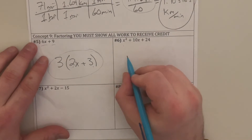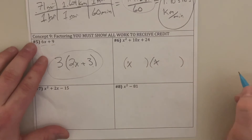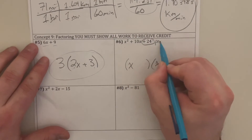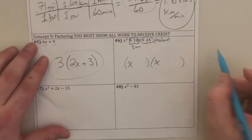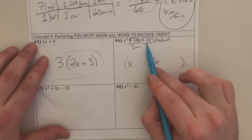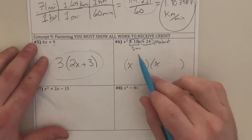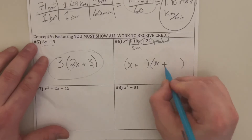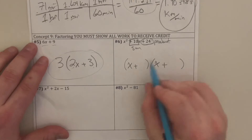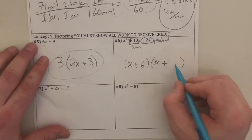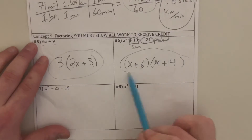For the next one, always build your foundation first. I have x and x like this. I can say my product is 24 and my sum is 10. I need two numbers multiplied together to give me positive 24, which means both signs are going to be the same. Since the sum is positive, both of them are going to be positive. Use those clues together to determine your signs. So 6 and 4 would work: 6 plus 4 is 10, and 6 times 4 is 24.